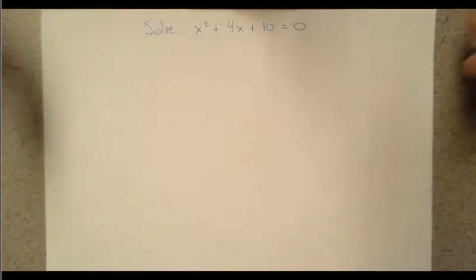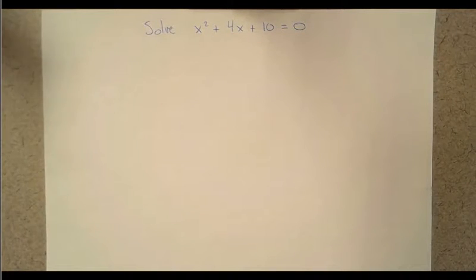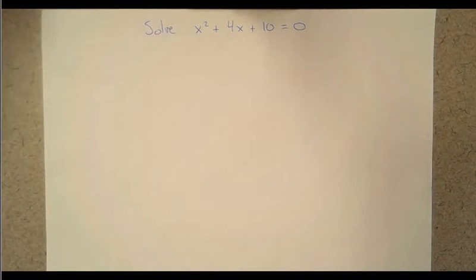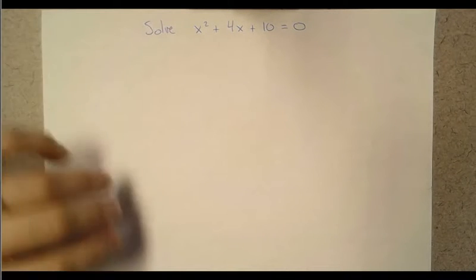Alright, we've got a quadratic we want to solve here. So x squared plus 4x plus 10 equals 0. Now we've got different methods we could solve this. I'm going to go ahead and complete the square on this one to kind of review that process with you.